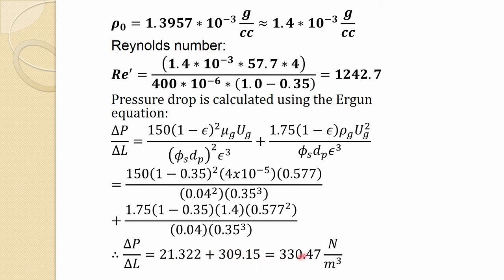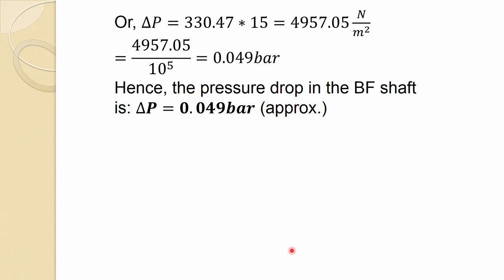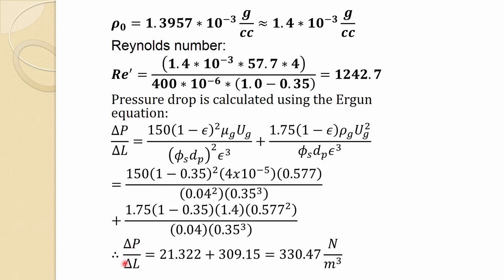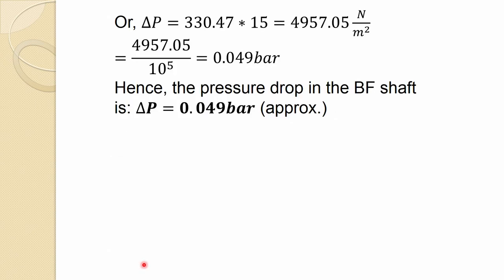The total pressure drop is ΔP/ΔL multiplied by the bed length ΔL = 15 meters. This gives a total pressure drop in N/m², which converts to approximately 0.05 bar. Hence the pressure drop in the shaft furnace is 0.05 bar.